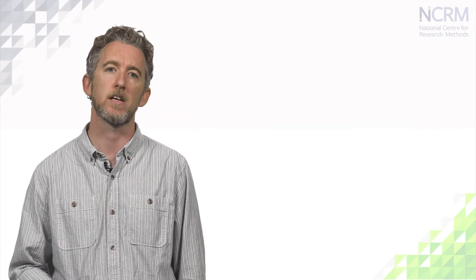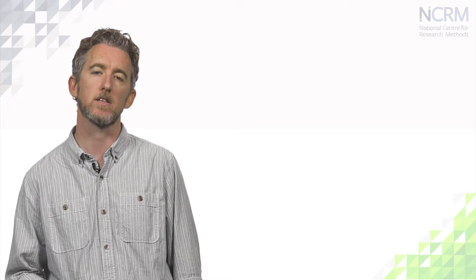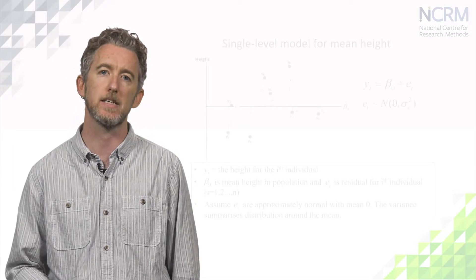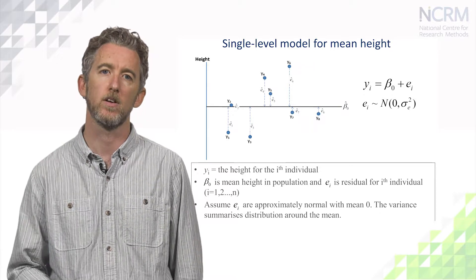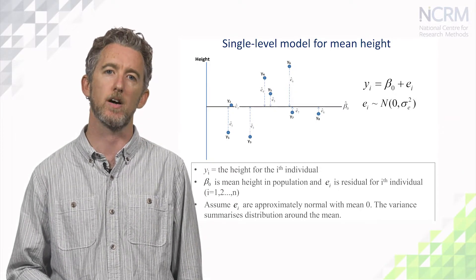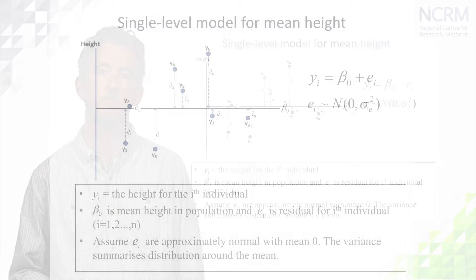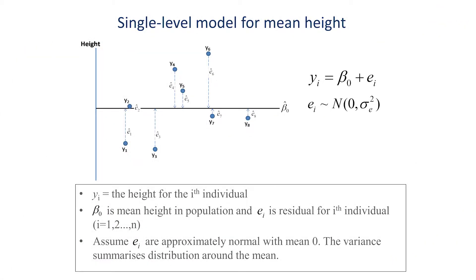To explain the logic behind the random intercept model, I want to discuss a very simple example with just eight data points that each record a person's height. We can represent the distribution of heights with the mean height across the sample and the variance or standard deviation which captures the spread of heights.